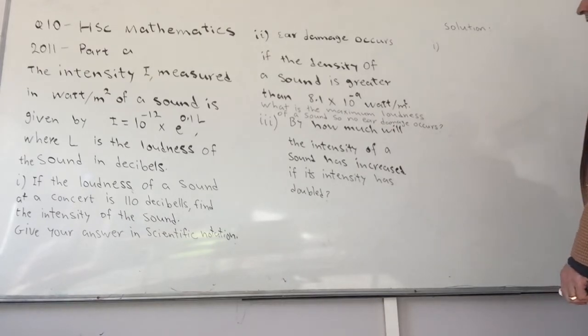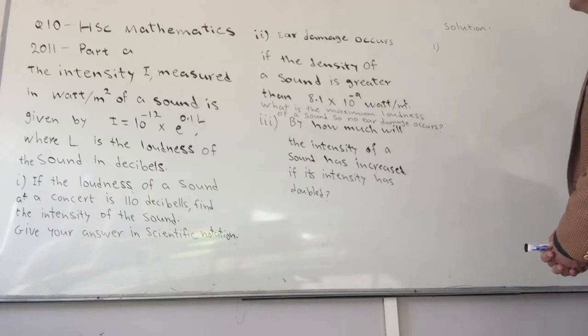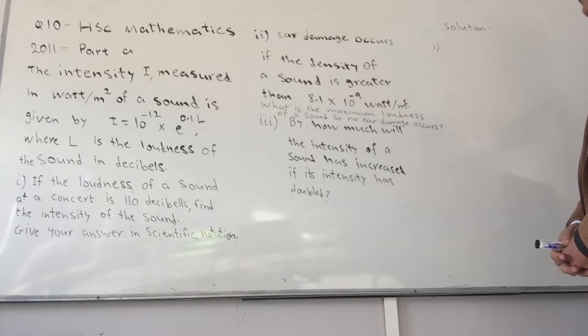For part ii, they are saying that ear damage occurs if the intensity of a sound is greater than 8.1 times 10 to the minus 9 watts per square meter. What is the maximum loudness of a sound so no ear damage occurs?